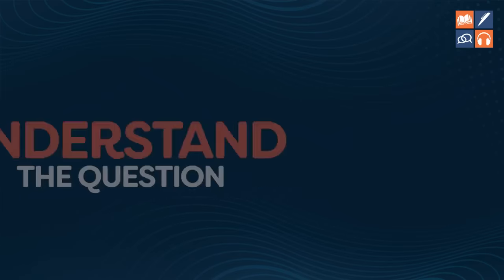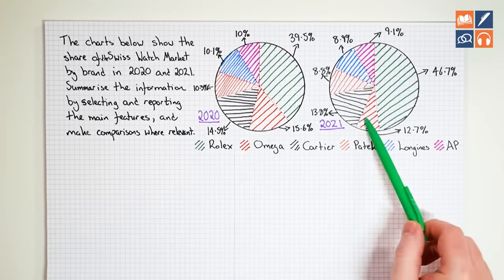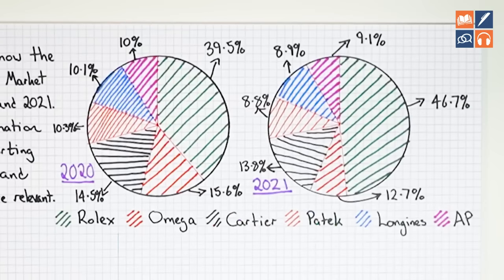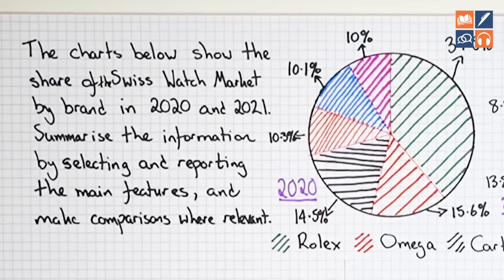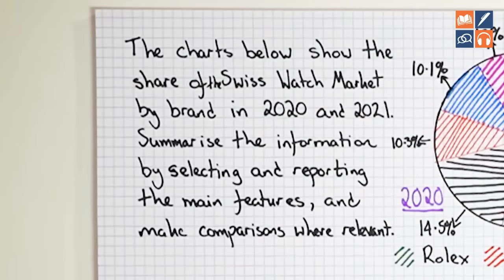The first thing we need to do is understand the question and understand the data. A lot of students get scared when they see pie charts, but they're really nothing to be scared of. You will normally get two or three, maybe even four pie charts, but the more pie charts there are isn't going to make it more complicated. The question format never changes — you will always have a question statement giving you information about the data. For this one, it says the charts below show the share of the Swiss watch market by brand in 2020 and 2021. That information is really helpful, so make sure you read and understand it — it will also be important for our introduction.